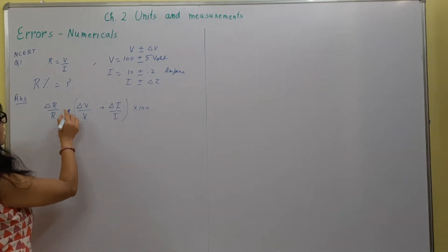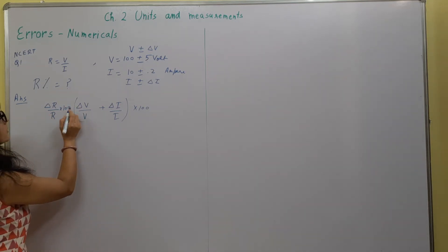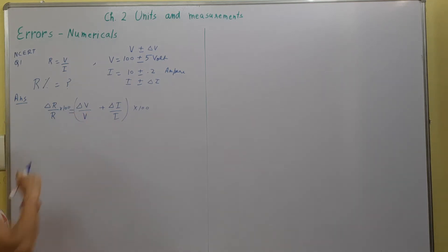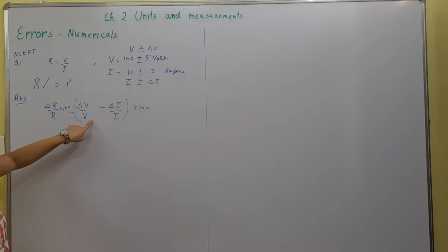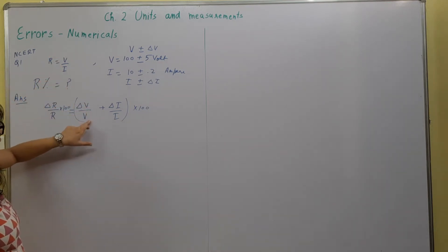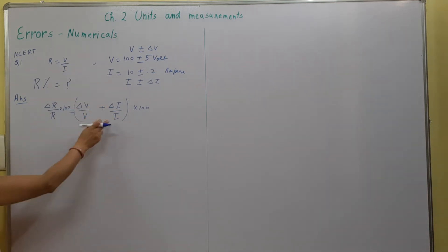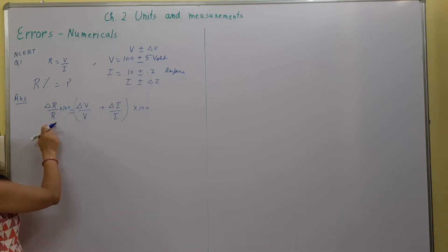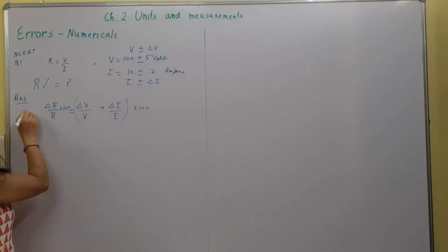Why have we written the plus sign here? Because we know that when two quantities are in division form, the resultant error will be the sum of the relative errors in the individual quantities being divided. This is V upon I, so delta V upon V will be the relative error in V, and delta I upon I will be the relative error in I. Adding these gives the total relative error in resistance. Multiplying by 100 on both sides gives the percentage error in resistance.